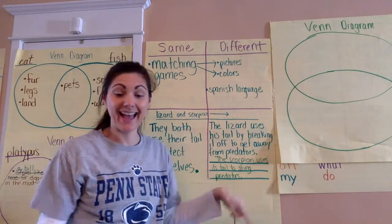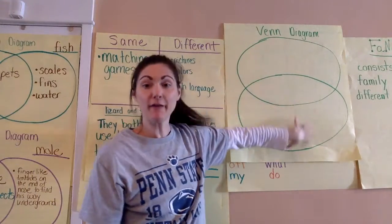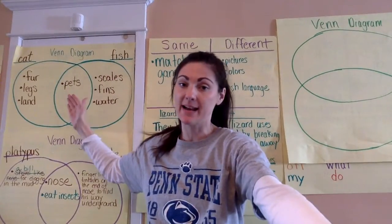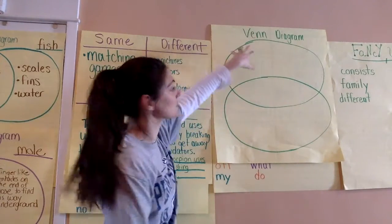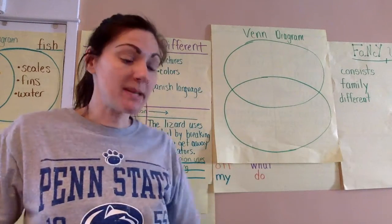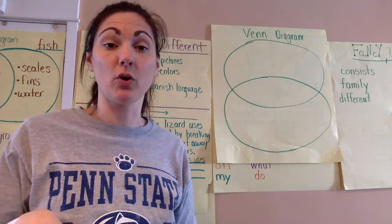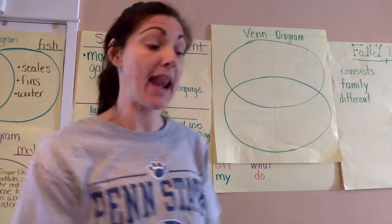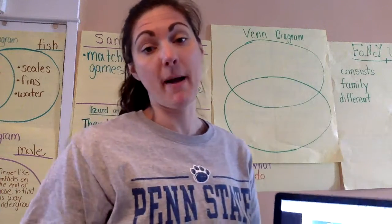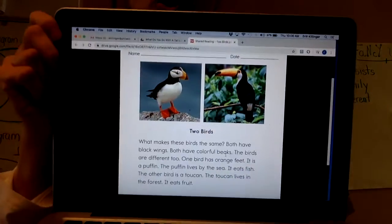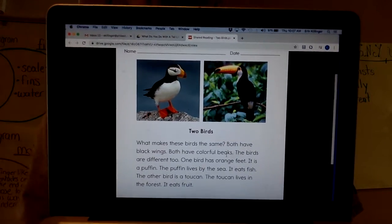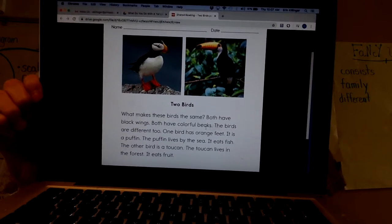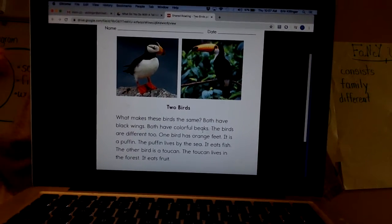Today we're going to go back to using another Venn diagram, but set up a little bit differently. This Venn diagram over here has circles side by side, and this Venn diagram here has circles top and bottom. Since we didn't do a shared reading lesson yesterday, I did have an optional assignment on the Google Drive — just a paragraph about two birds from Reading A to Z. I'm going to read this and then we'll use the Venn diagram to compare and contrast.